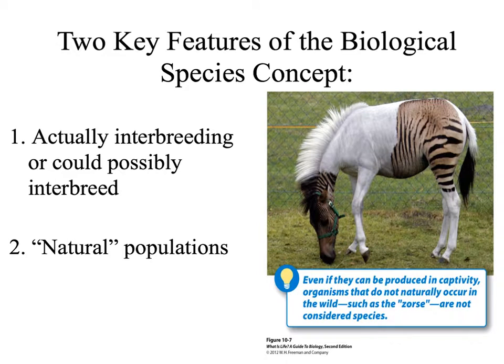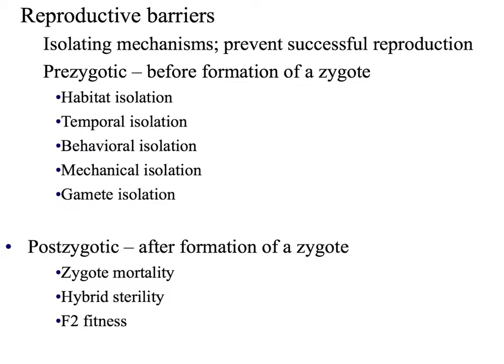There are two key features of the biological species concept. First, these populations have to be able to actually interbreed or possibly interbreed. Second, we are looking at natural populations — ones found out in nature on their own, not in places like zoos or laboratories. The biological species concept focuses on reproductive barriers, which are isolation mechanisms that prevent successful reproduction. There are two types: prezygotic barriers, which occur before the formation of the zygote during fertilization, and postzygotic barriers, which occur after the formation of the zygote.